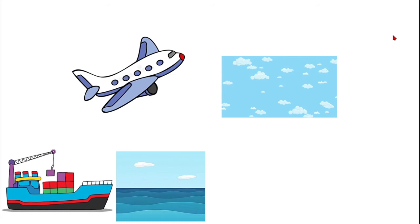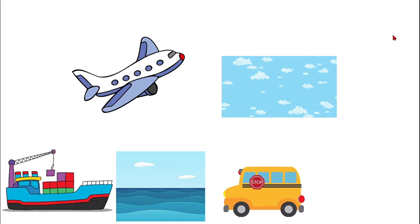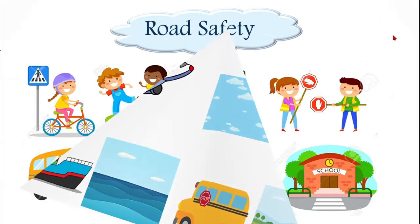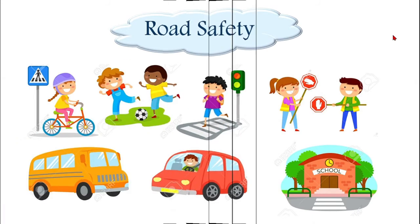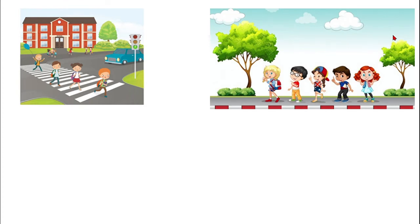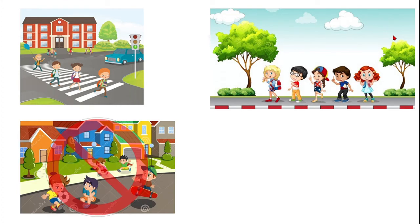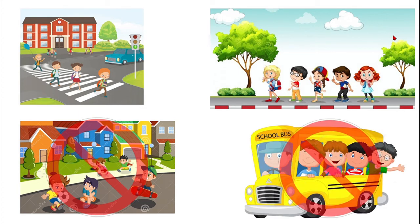This is a bus. Buses move on the road. Now we will talk about road safety. Look at the picture. We have to cross the road at the zebra crossing. Walk on the pavement. Don't play at the roads.